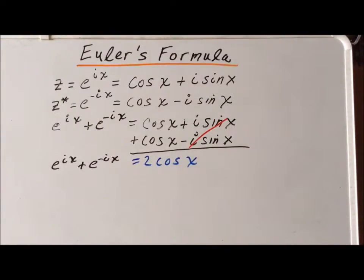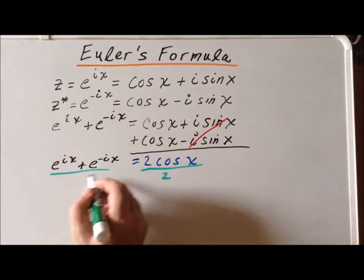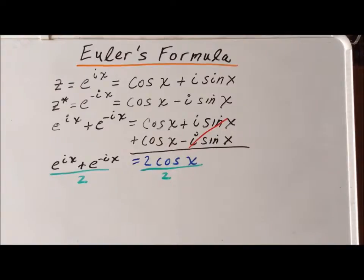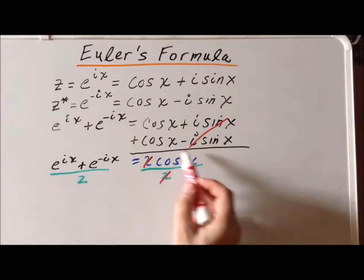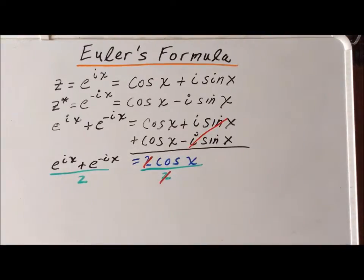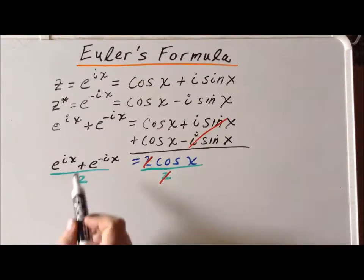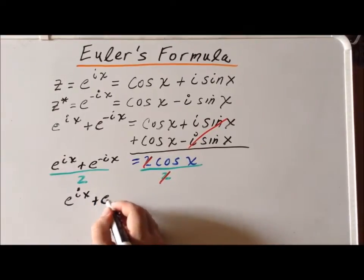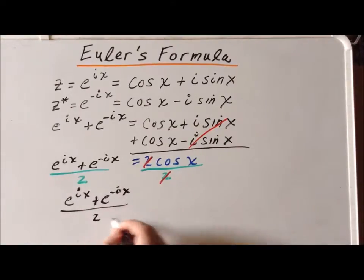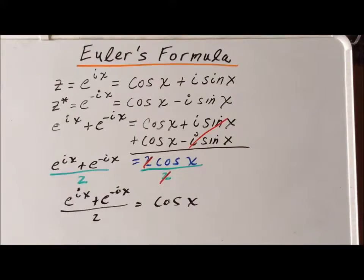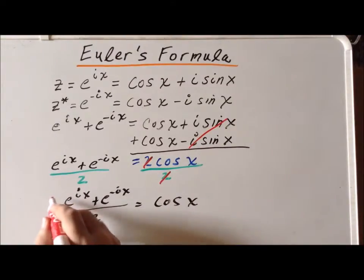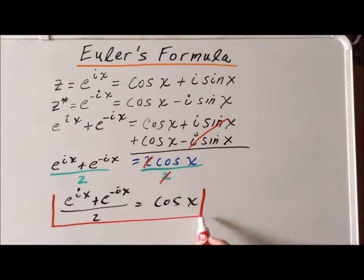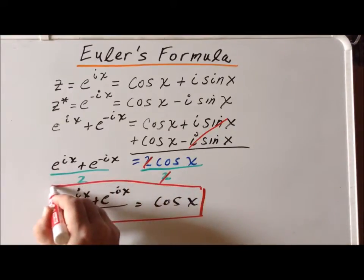We can go one step further and divide each side by two. The twos on the right-hand side cancel, and we've come up with a new identity for cosine of x. So e to the i x plus e to the minus i x over two is equal to the cosine of x. This is a very interesting way of rewriting the cosine function from trigonometry in terms of exponential functions that involve imaginary numbers.